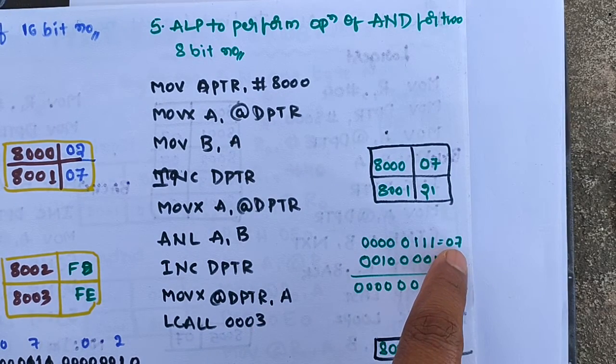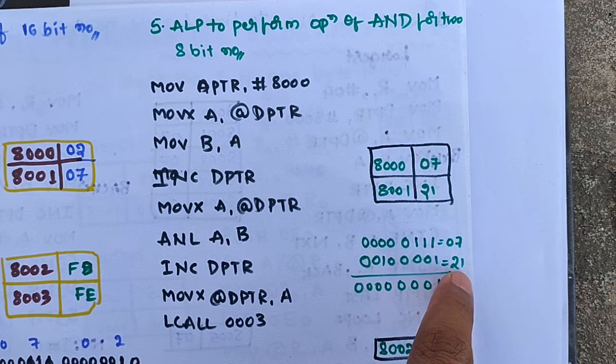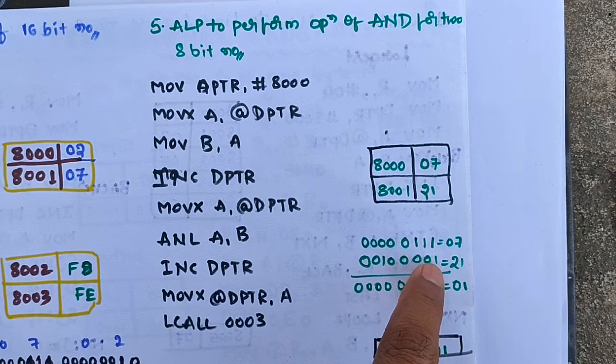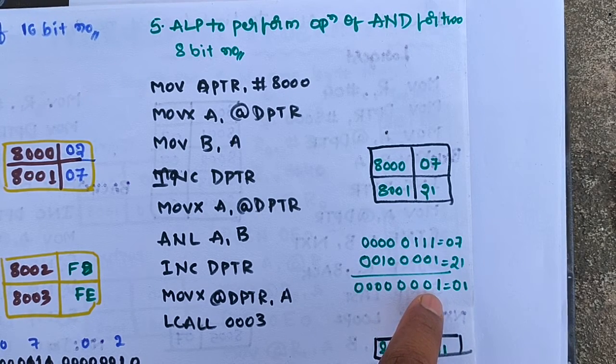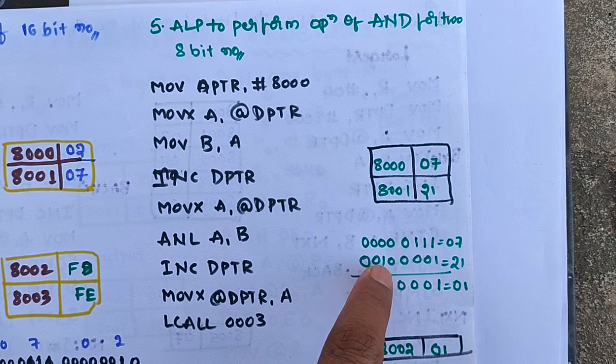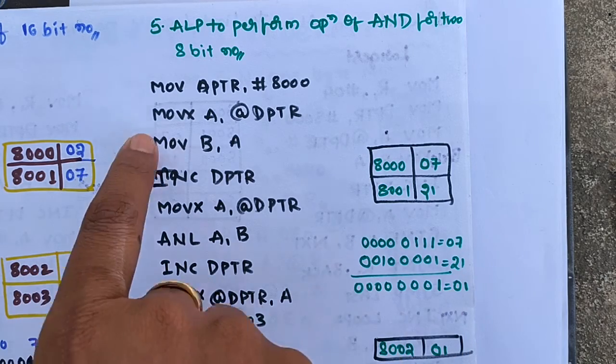These two bytes will undergo an AND operation. The result will be: 1 AND 1 gives 1, 1 AND 0 gives 0, and 0 AND 1 also gives 0. Therefore the resultant is 01.